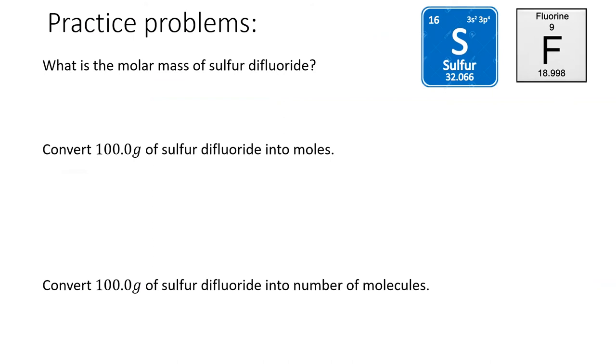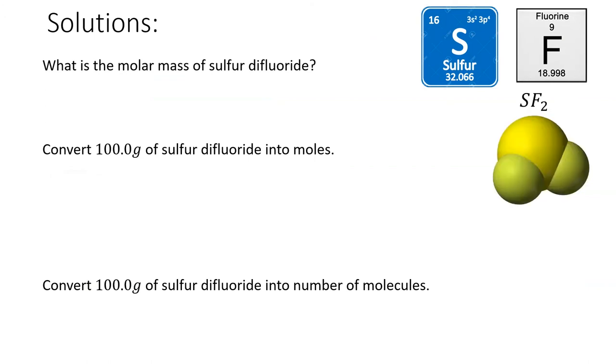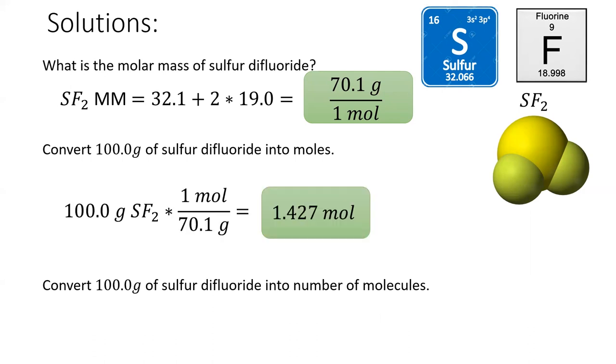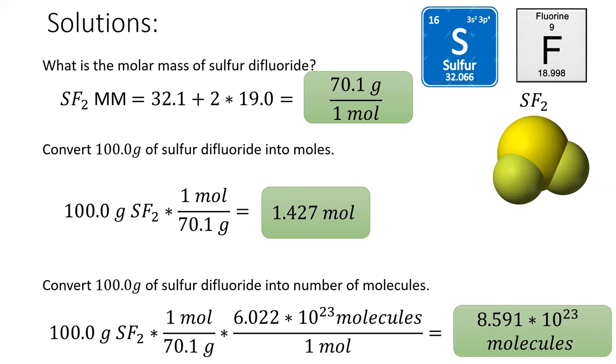Okay, pause the video and see if you can answer these questions about sulfur difluoride. To calculate the molar mass of sulfur difluoride, we first need to know the formula of sulfur difluoride, which is SF2. To calculate the molar mass, we'll take the mass of one sulfur and add it to the mass of two fluorines. Sulfur dioxide weighs 70.1 grams per mole. To convert 100 grams of sulfur difluoride into moles, we need a conversion factor to go between grams and moles. Luckily, the molar mass we just calculated is the perfect conversion factor. Be sure to flip the fraction so that grams is on the bottom and our units cancel properly. To convert from grams to individual molecules, as in the last question, we need two conversion factors. We'll use the molar mass first, but then we need to convert from moles to molecules using Avogadro's number.